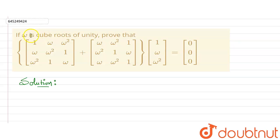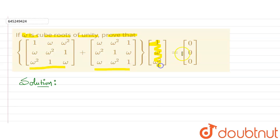Hello everyone. In this question it is given that if omega is the cube root of unity, we need to prove that this matrix plus this matrix, and then the result multiplied with this matrix here, will give us the zero matrix.